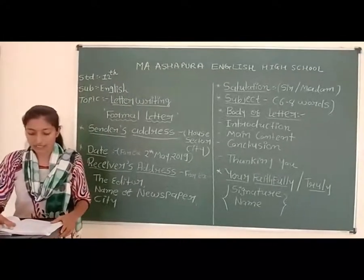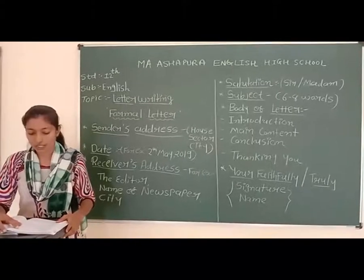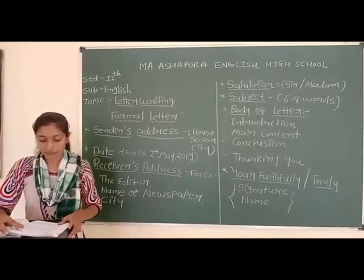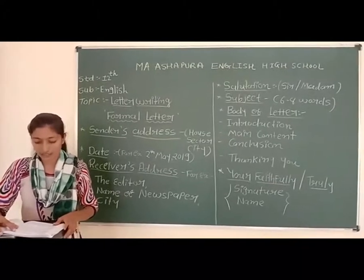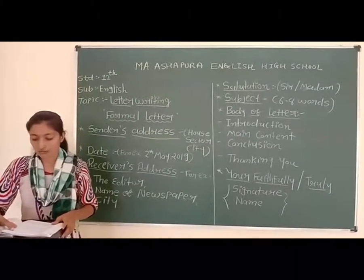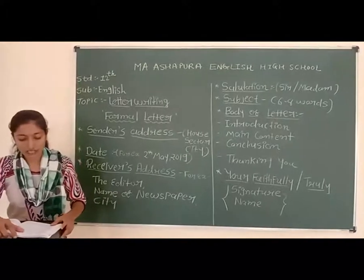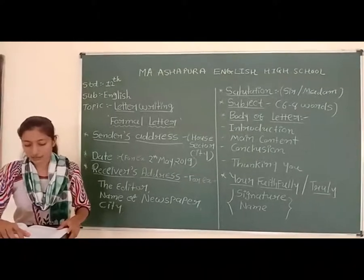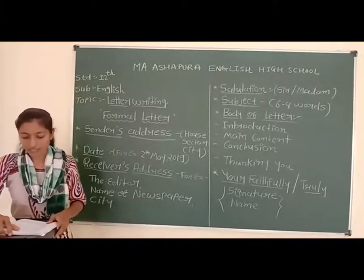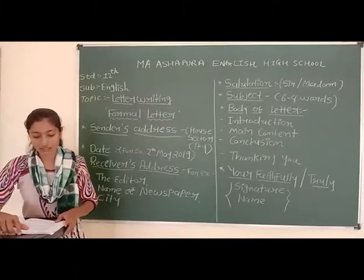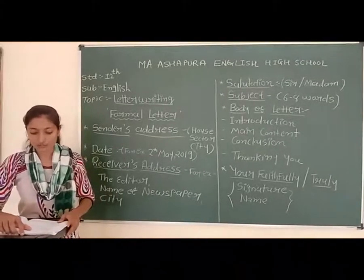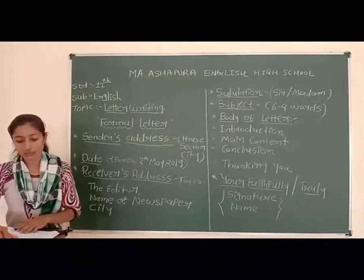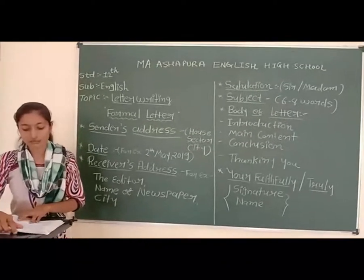Kanka is a public school run by an NGO to give quality education to the children of the deprived section of society. The principal of the school notices that the blackboards and classrooms need to be replaced. She decided to ask the chairperson of the NGO named 'Education for All'. Write her letter in 120 to 150 words.